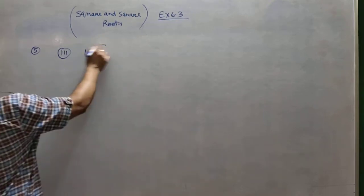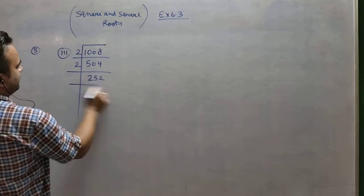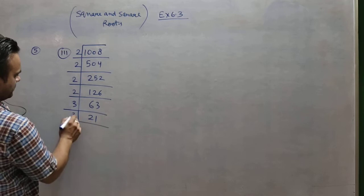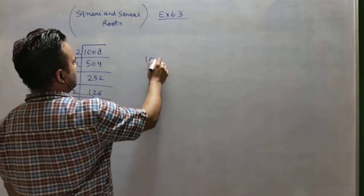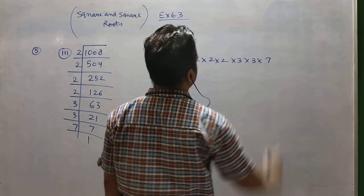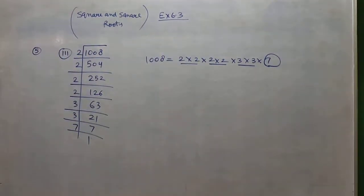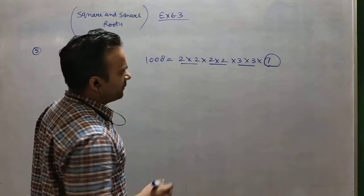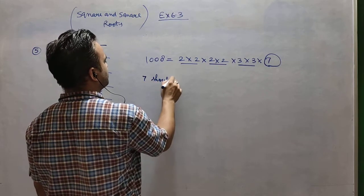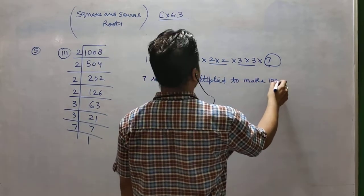We do the prime factorization: 504, 252, 126, 63. Looking at all the factors received, there is one factor which is not in pair form. Two is in pair form, these two are in pair form, these two are in pair form, but this one is not. Therefore it is not a perfect square. To make it a perfect square by multiplying something, 7 should be multiplied to make 1008 a perfect square.